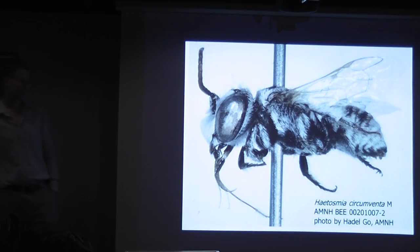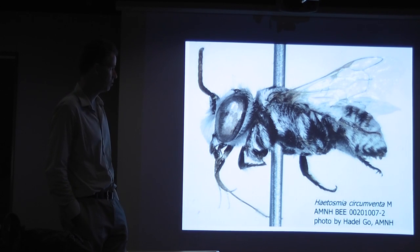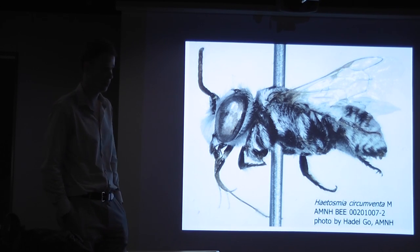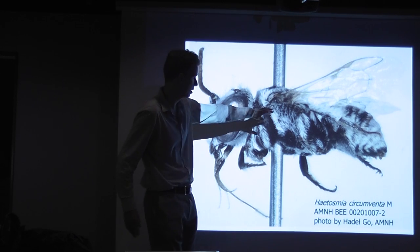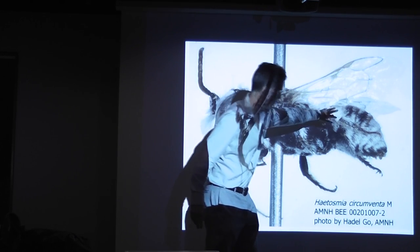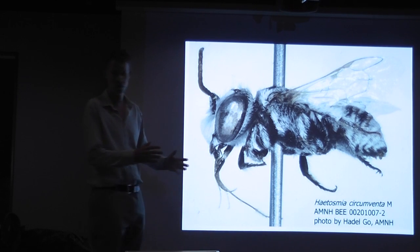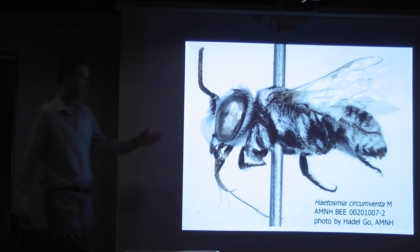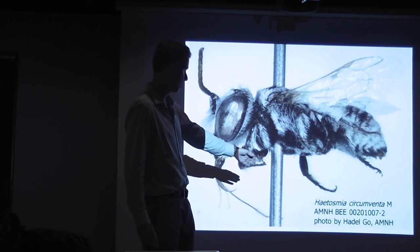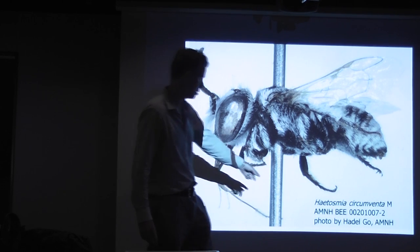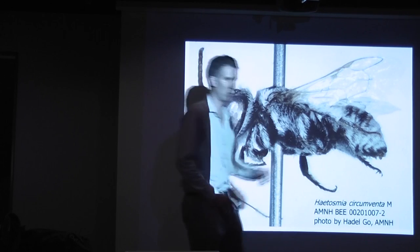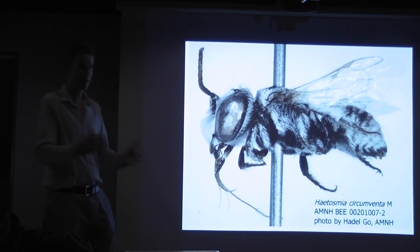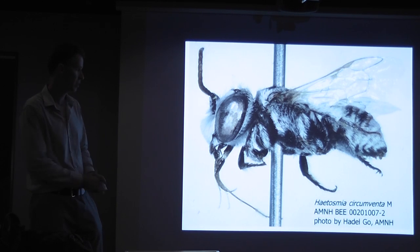Out in the desert we find bees quite numerous and unlike anything in other environments. This one's covered in white hairs, which probably reflects the sun and protects it from UV damage — in particular the abdomen where eggs are stored. This photo was taken by Hedel Goh of the specimen at the AMNH, and it's been databased. All the label data and the image are available and integrated into various biodiversity portals.